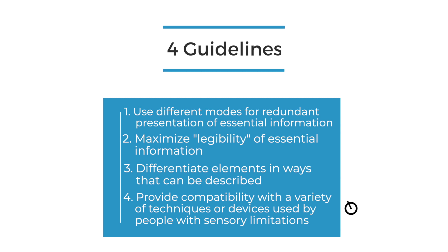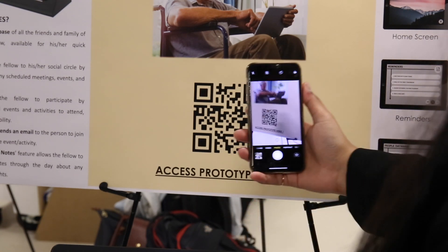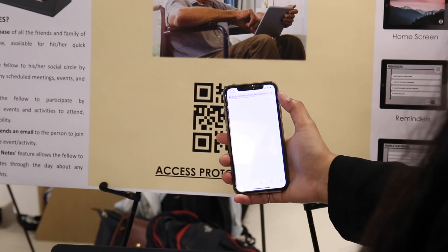The last guideline for the universal design principle of perceptible information is to provide compatibility with a variety of techniques or devices used by people with sensory limitations. One low-hanging fruit when implementing this in both the built and virtual environment is a QR code — something easily accessible that gives a lot of information. If you embed it with beacon technology that alerts users a QR code is nearby, they can quickly get information in the format that makes the most sense for them, making everything much more easily understood and perceived.